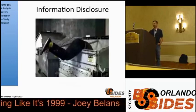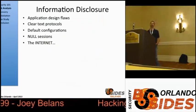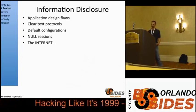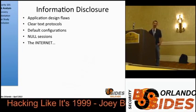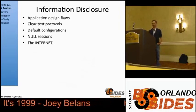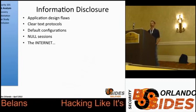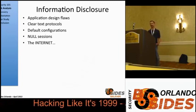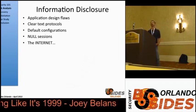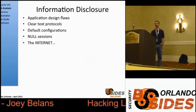We'll start with information disclosure. In and of itself, it may not necessarily lead to an immediate compromise, but if you divulge enough information to an attacker and give them enough vectors, they might piece it all together to perform future attacks. The areas I'll cover include application design flaws — for example, if a web application with a database backend reveals the database type through a standard error message, an attacker now knows what techniques to use against that database. Clear text protocols still exist today — people are still using Telnet and FTP — and anything that traverses those protocols is potentially available to an attacker.